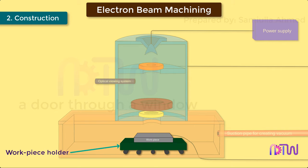Workpiece holding device: The workpiece is held rigidly on the workpiece holding device, which can move in all three directions, that is, in the X, Y, and Z axis.